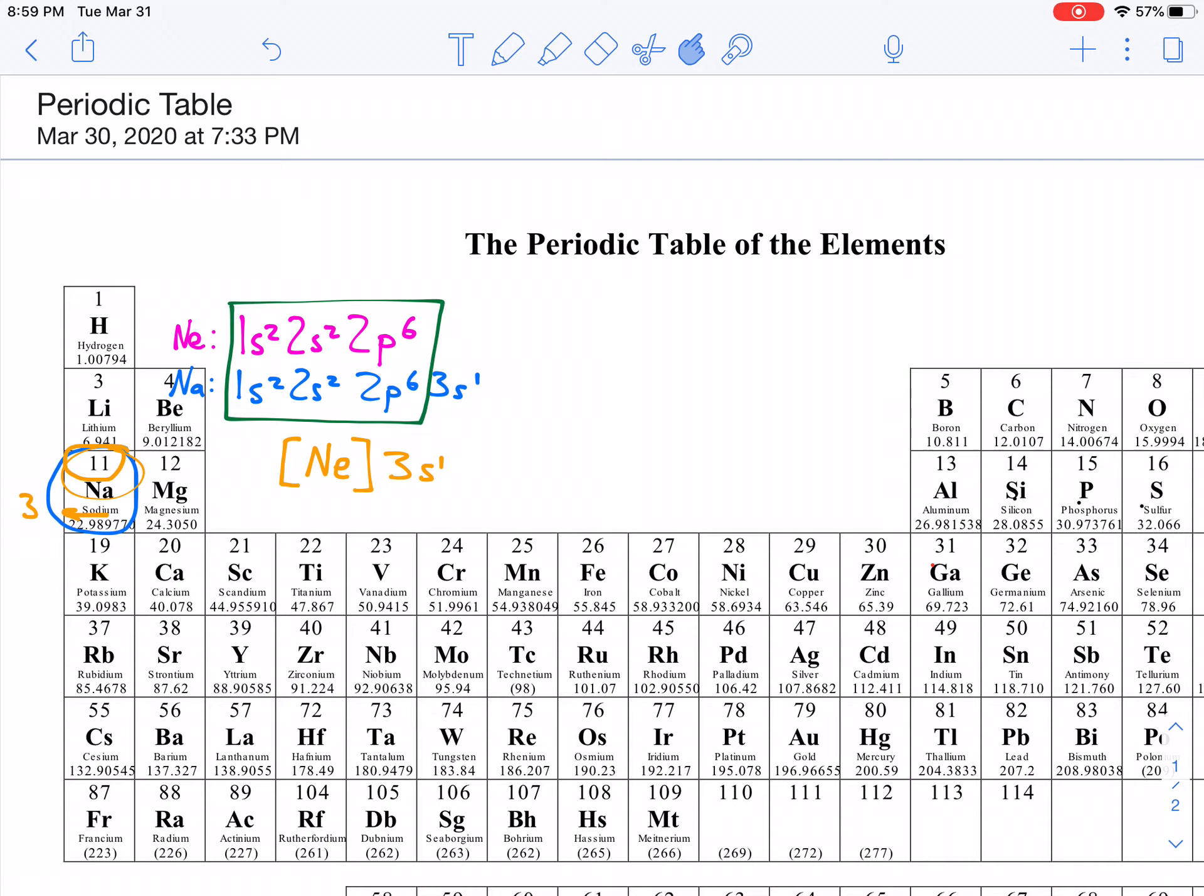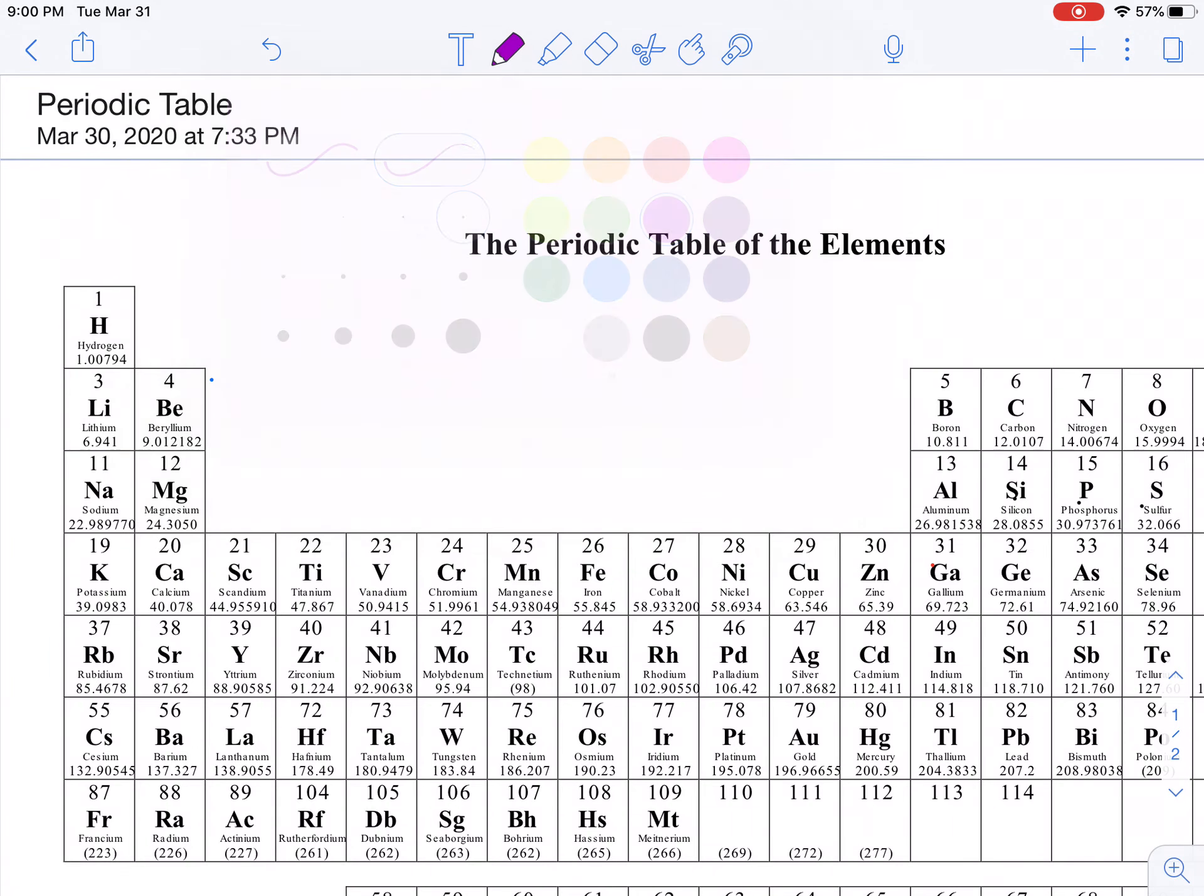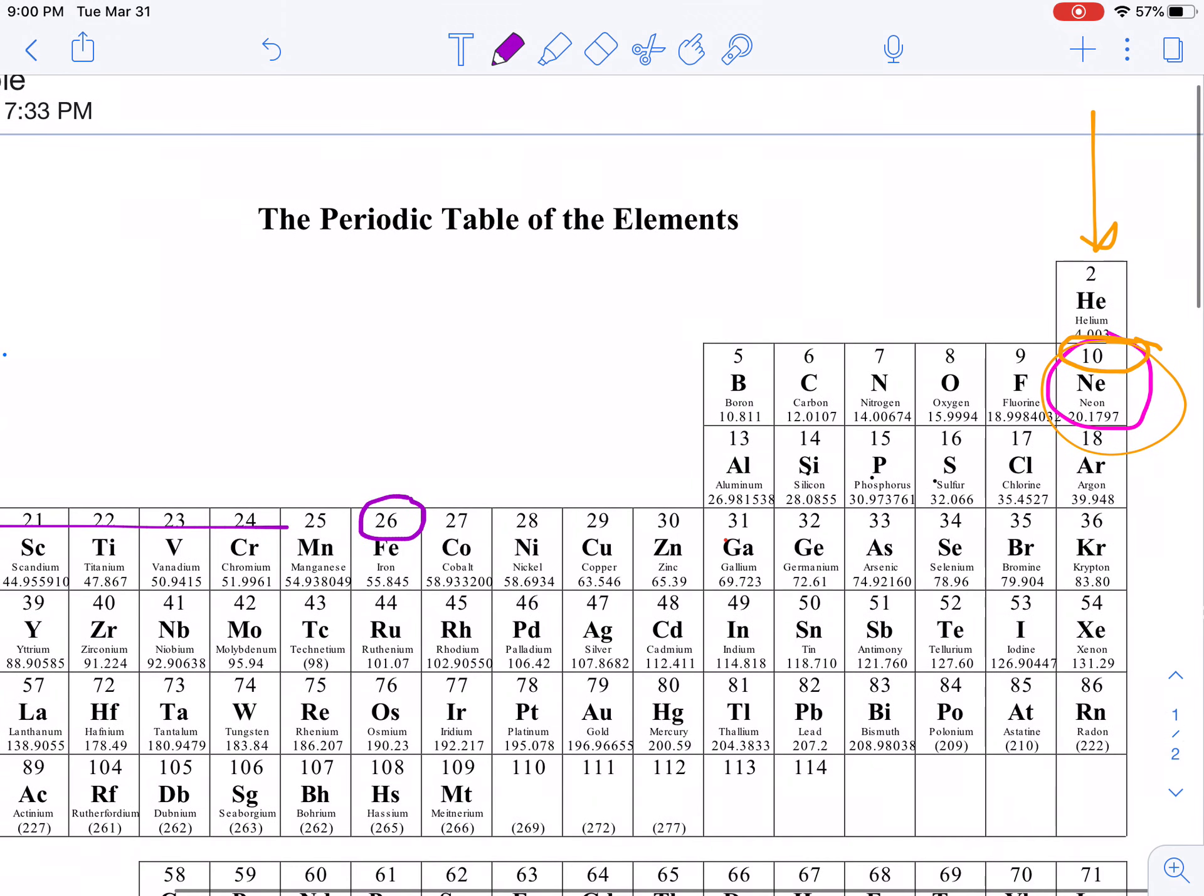We're first going to write the noble gas notation for iron. So, iron is Fe. Let me just erase what we have here, and we'll start from scratch. For iron, if we look at its atomic number, its atomic number is 26. So, if we backtrack from 26, the next noble gas that we get to in terms of atomic number before 26 is 18. So, that's argon.